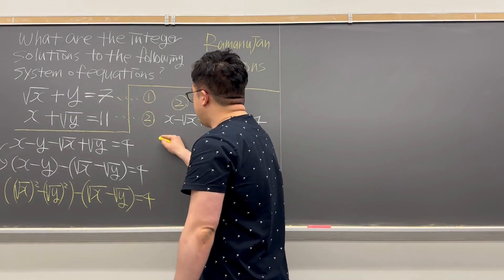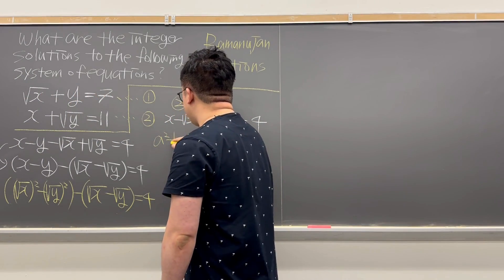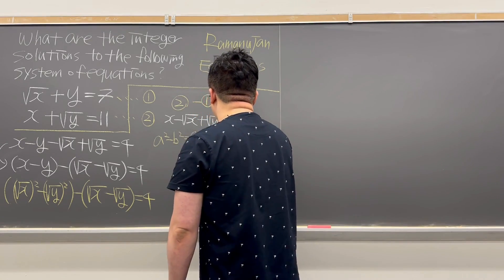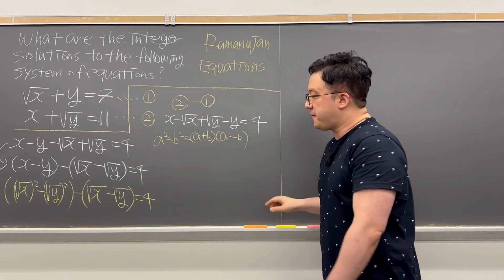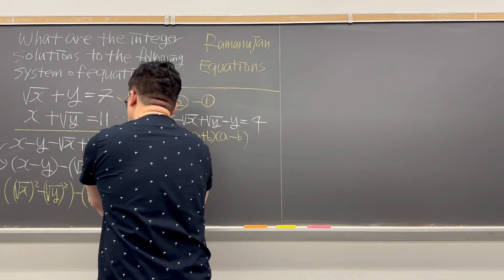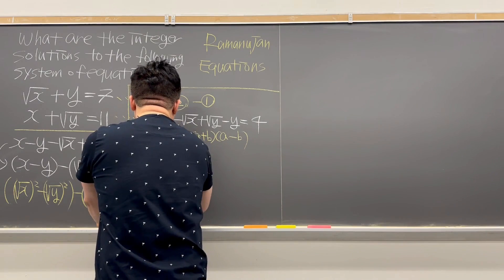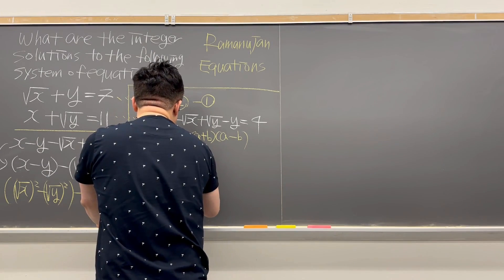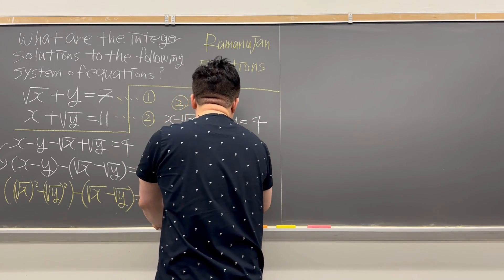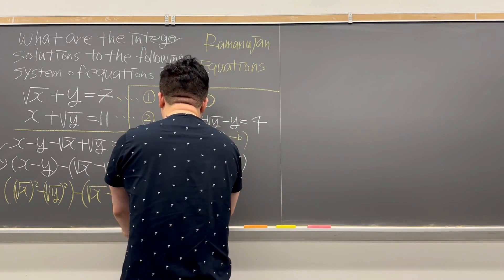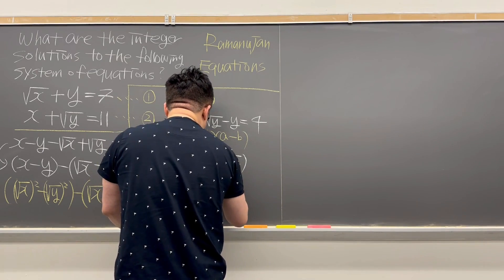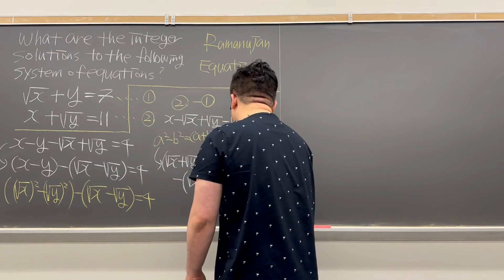Using the identity a² − b² = (a + b)(a − b), we can rewrite the first parenthesis. So we have (√x + √y)(√x − √y) minus (√x − √y), and that is still equal to 4.